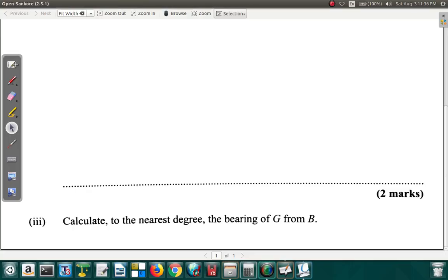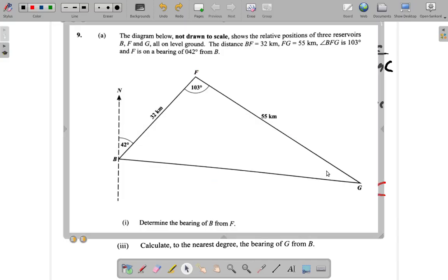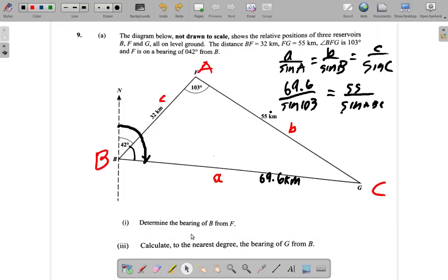So what this is saying is that 71.4 is equal to 55 over sine ABC. Now the sine of ABC, when you transpose, is going to be 55 over 71.4.